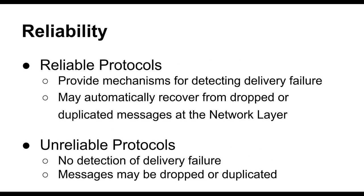That brings us to the subject of reliability. Reliable protocols provide mechanisms for detecting delivery failure and automatically recover from dropped or duplicated messages at the network layer — either by removing duplicates or by resending dropped messages. Unreliable protocols do no type of detection of delivery failure; they simply send the message and don't care whether it arrives.